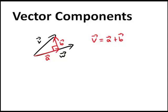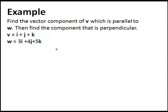Now let's have a look at a particular example. Find the vector component of v which is parallel to w, then find the component that is perpendicular. So we're asked to find a and then b.